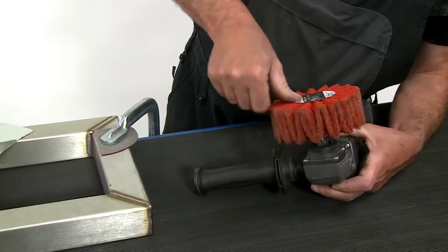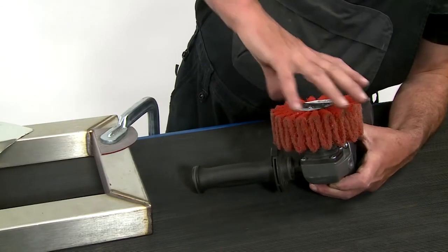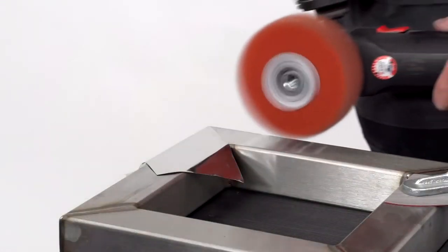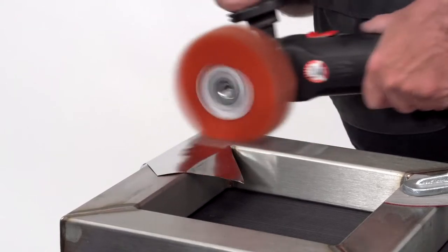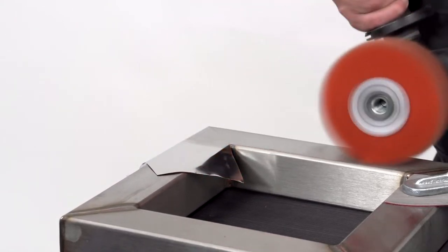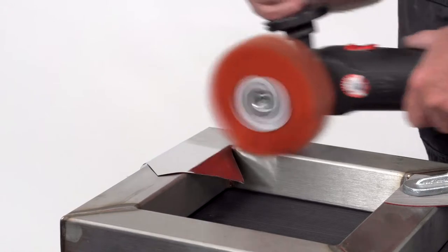Mount the orange folded sanding fleece ring on the INOX angle sander. Move the machine parallel to the frame side. Bring the finish to conformity through slightly increased pressure and faster movements in the direction of sanding.